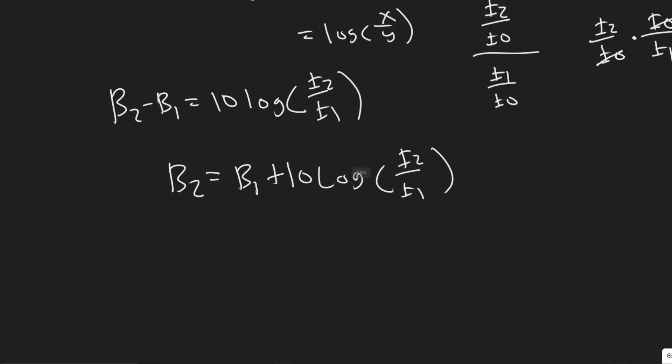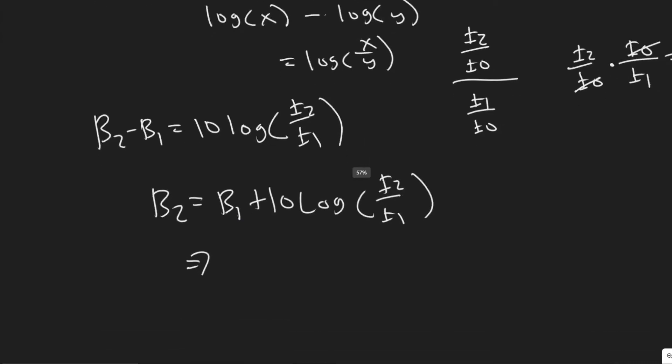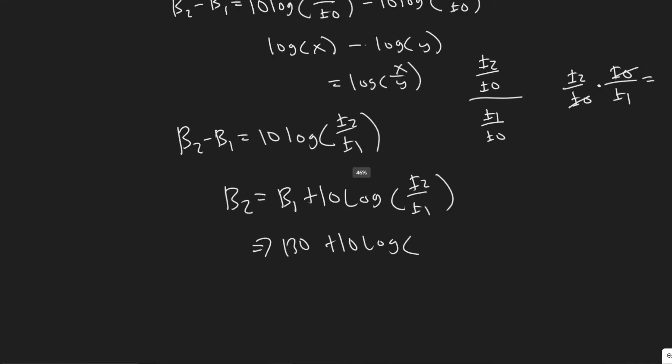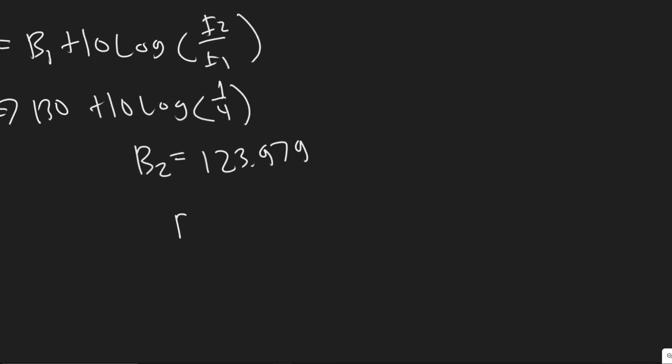Really this is equal to the sound level of scenario one, which they tell us is 130, plus 10 multiplied by the log of i₂ over i₁, which we just decided was one over four. So let's go ahead and plug this in: 130 plus 10 multiplied by the log of one over four. So β₂ equals 123.979, and I can round this, I'm just going to say 124.